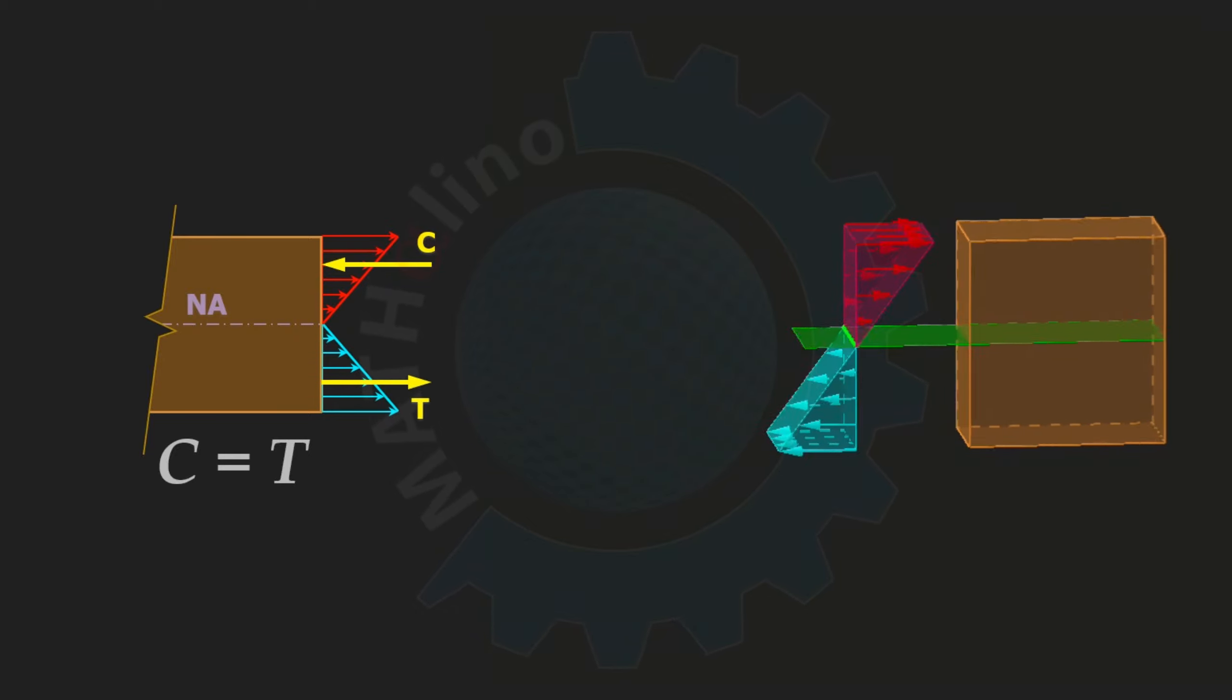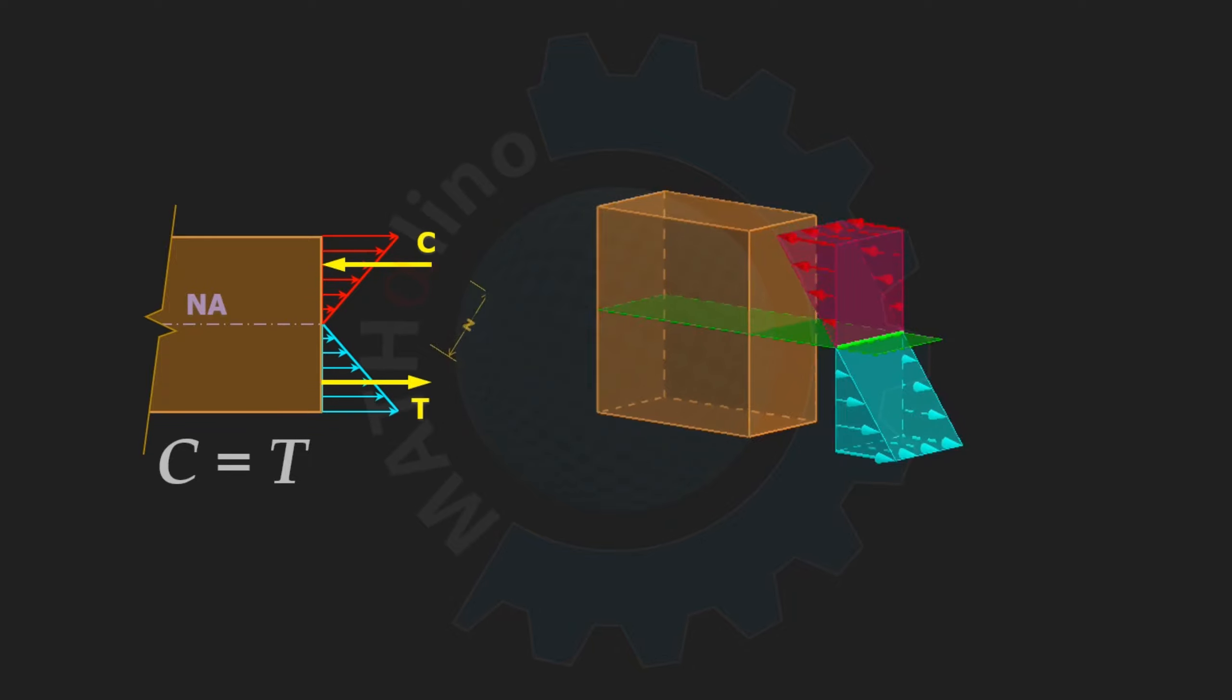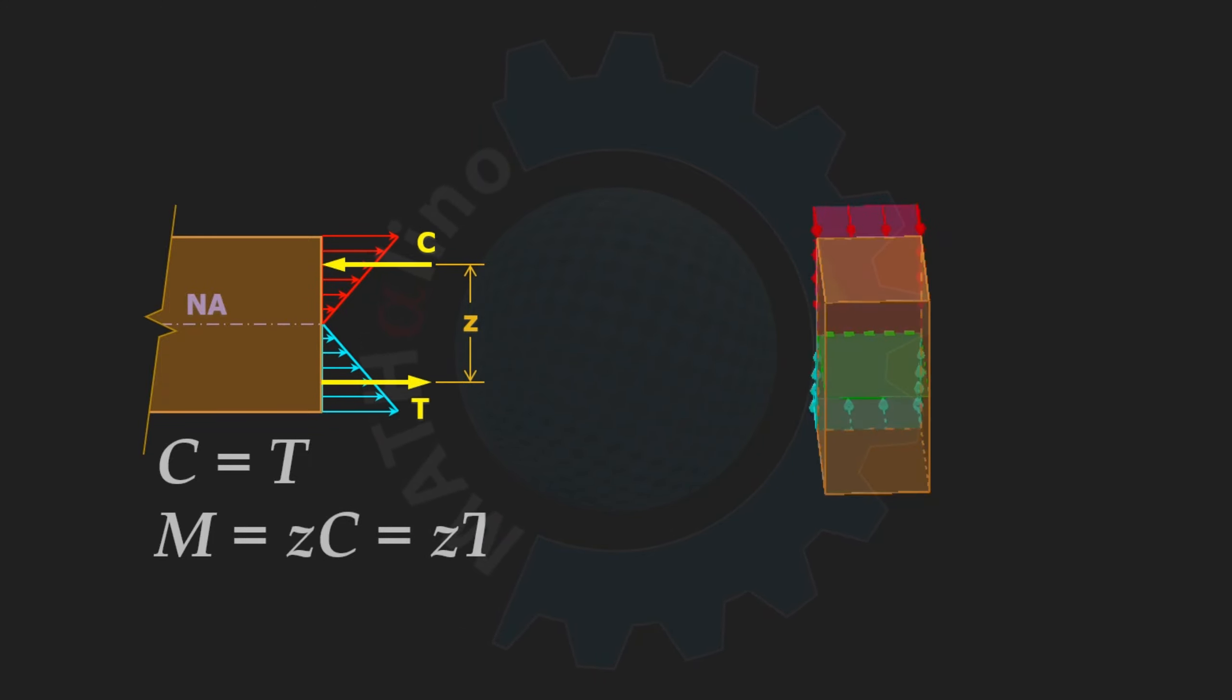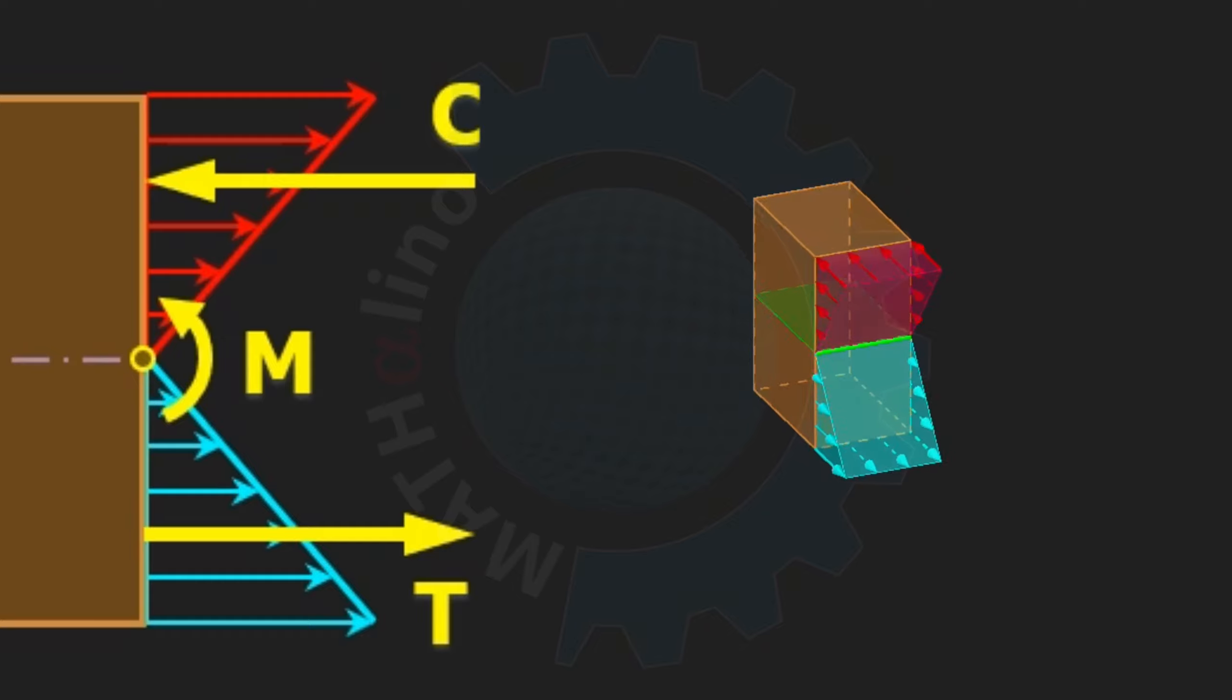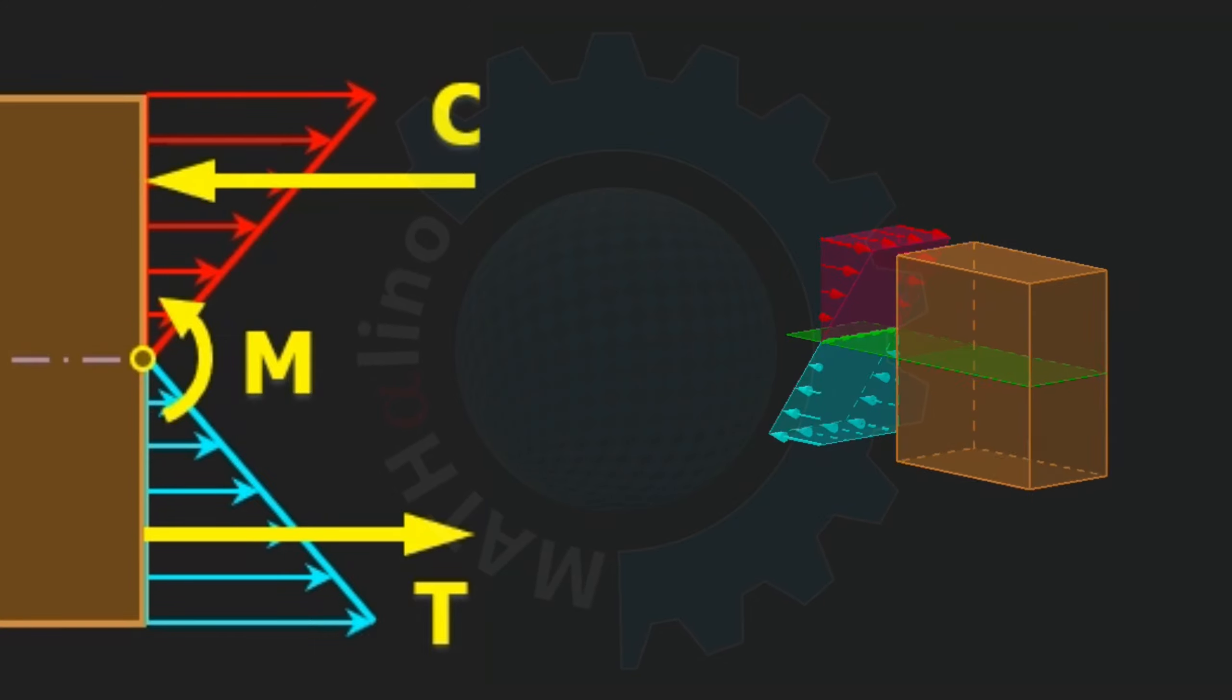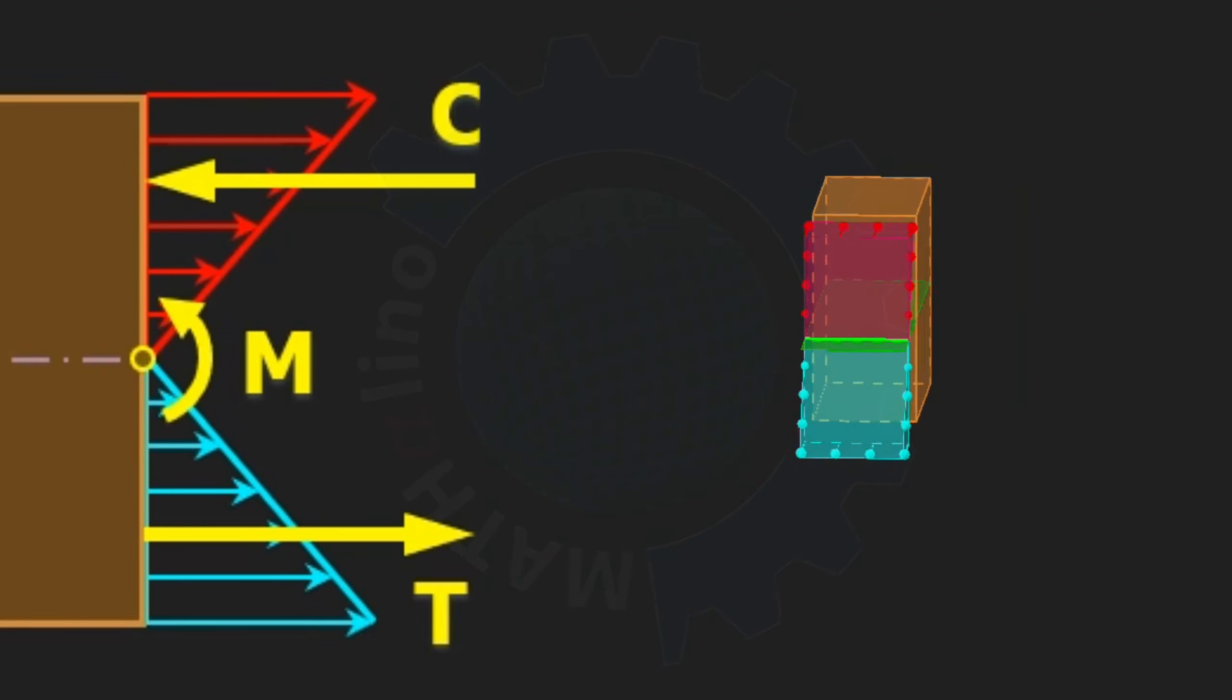These forces form into a couple, and the magnitude of this couple is equal to the moment perpendicular to the cross section. And this moment is applied directly at the plane of principal axis of the section.